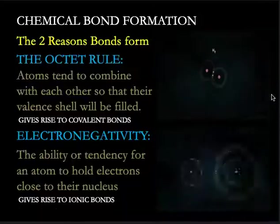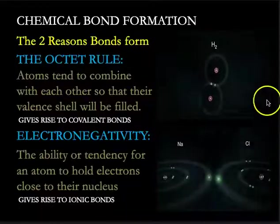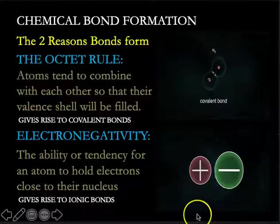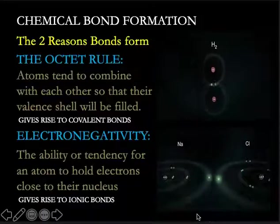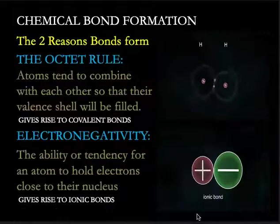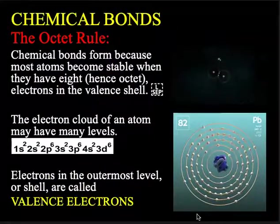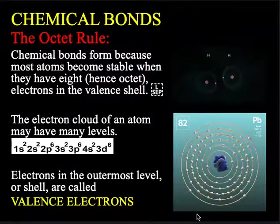So, the octet rule says that atoms want to have that outer shell filled, and when it is, they're happy. If it isn't, they're unhappy. There is also another trend of the periodic table called electronegativity that drives, or it's a description of how well an atom is able to hold its electrons, and we'll talk about that in a second. So, the octet rule. Atoms want to have their outermost shell filled.